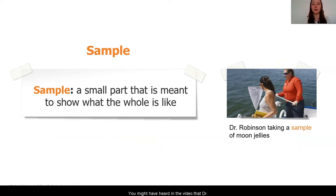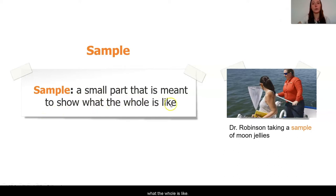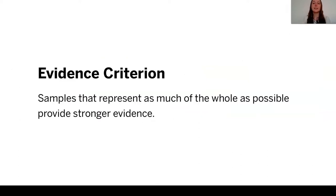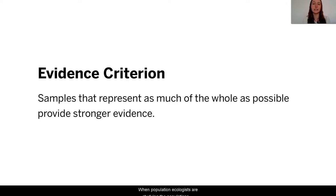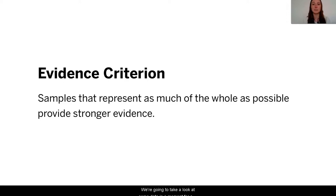So you might have heard in the video that Dr. Robinson takes something called a sample of moon jellies. A sample is a small part that is meant to show what the whole is like. You might have noticed that she used a net to gather her samples. Evidence is strong when the samples taken represent as much of the whole as possible. When population ecologists study populations, they take samples in a lot of different areas so that they can get as clear a picture as possible.